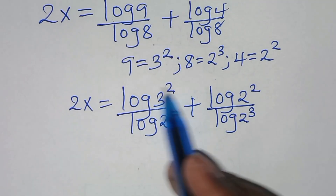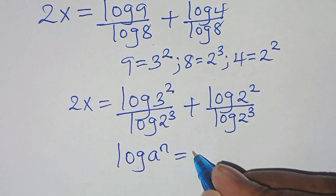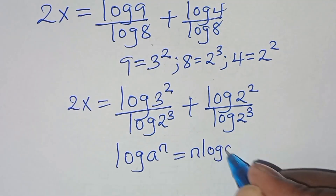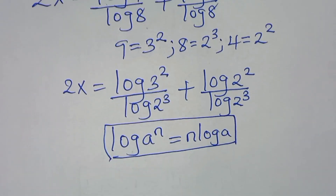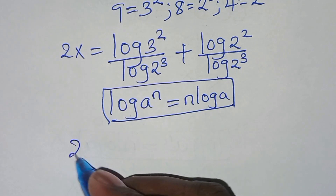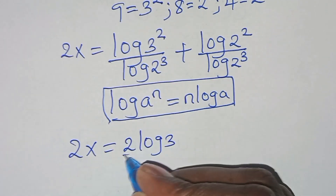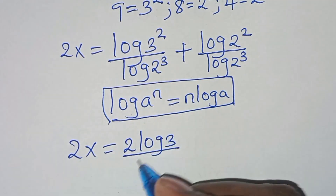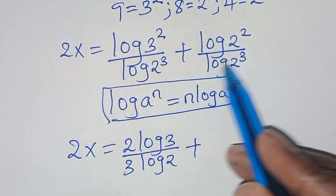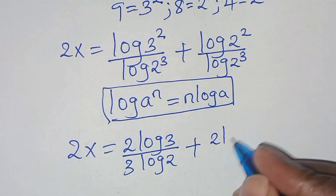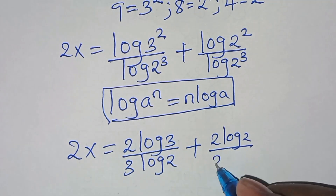Applying the power rule property — log a^n can be expressed as n·log a — then log(3²) becomes 2·log 3, and log(2³) becomes 3·log 2. So 2x equals 2·log 3 divided by 3·log 2, plus 2·log 2 divided by 3·log 2.